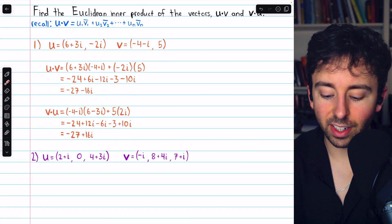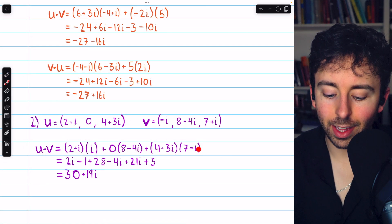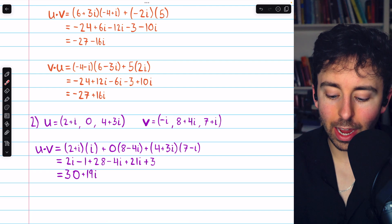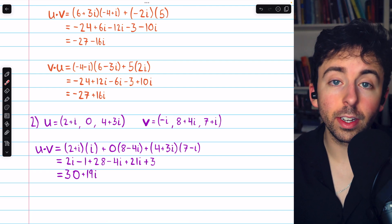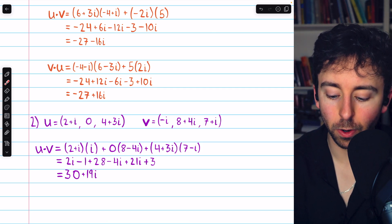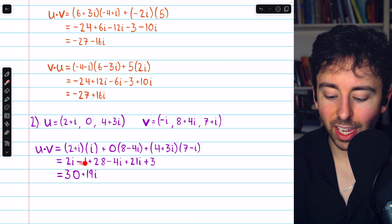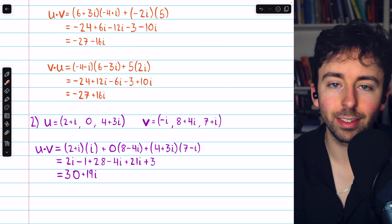All right, on to the second example. We'll begin with u dot v. And that looks like this. Two plus i times positive i. Zero times eight minus four i. And four plus three i times seven minus i. We're taking the conjugates of the components of the second vector, which is v. After doing all of the multiplication, we get here, and we can combine like terms to arrive at thirty plus nineteen i.